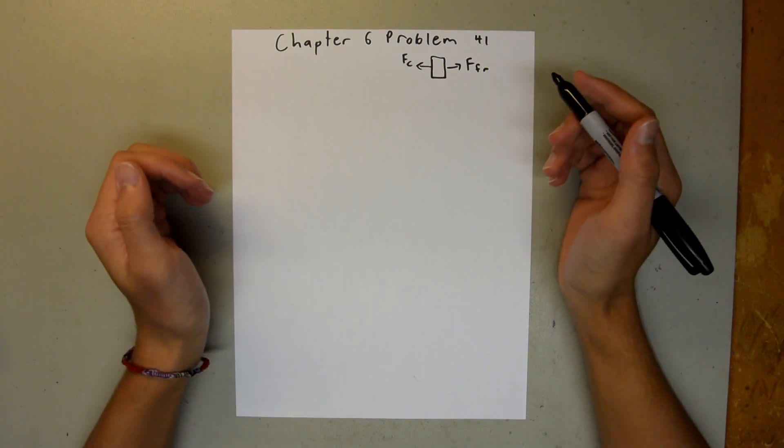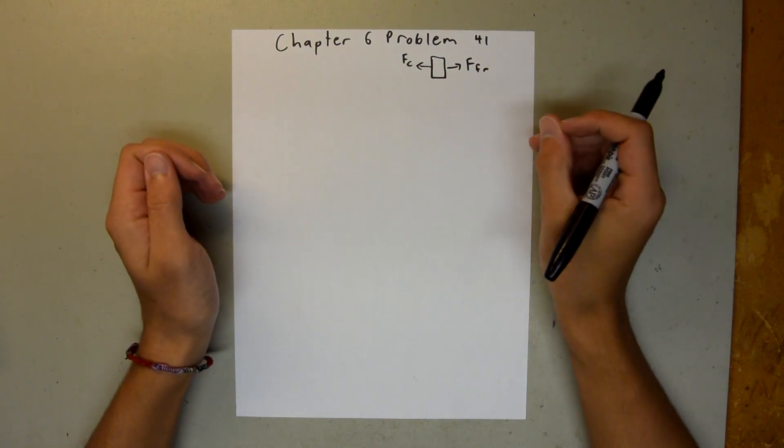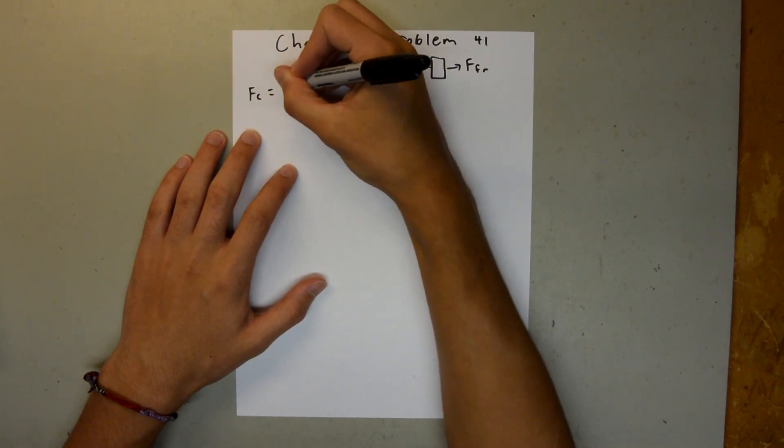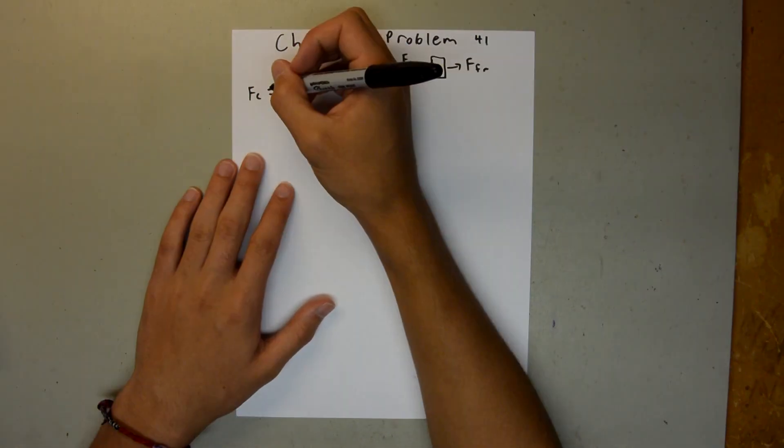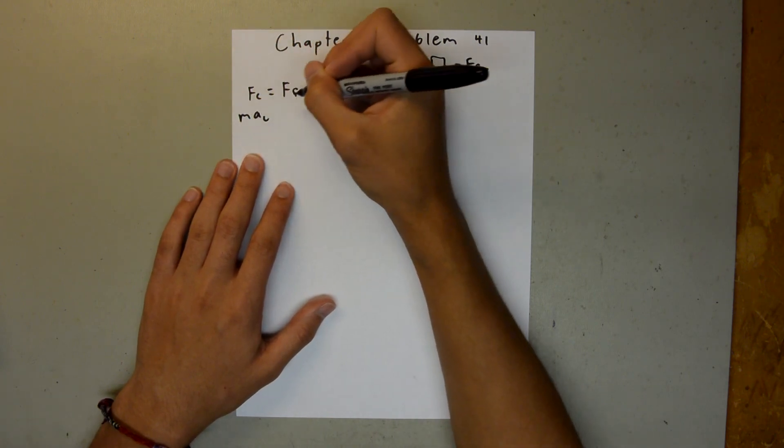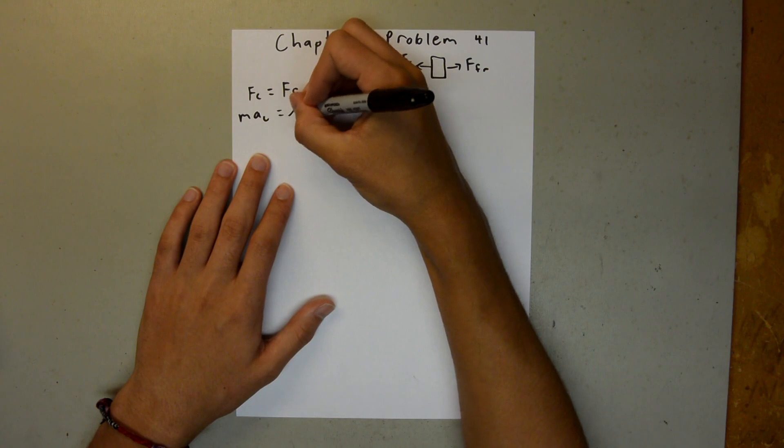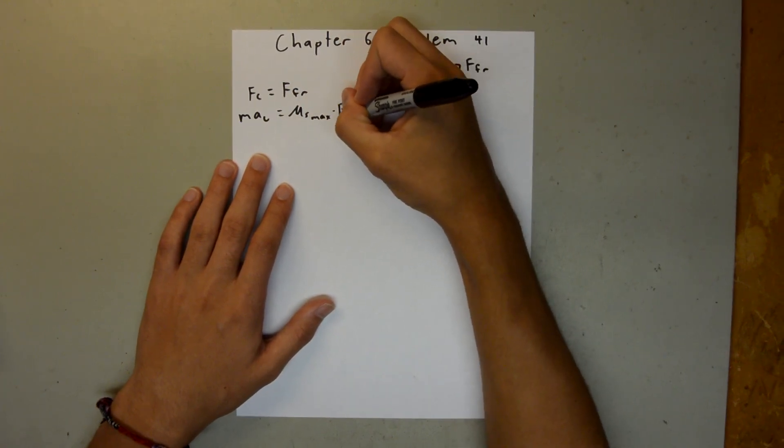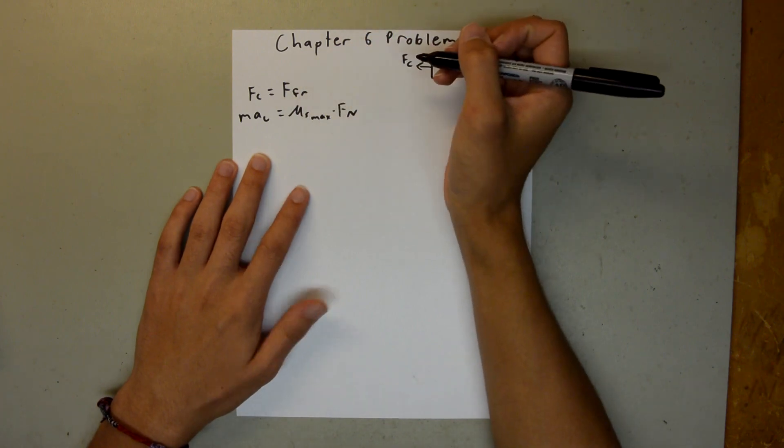The smallest radius of the turn will be just on the verge of the bike slipping, so we can say that the centripetal force is equal to the force of friction. The centripetal force is equal to m times a_c, this being the centripetal acceleration, and this is going to be equal to mu_s_max times the normal force. This is, again, because it's on the verge of slipping.